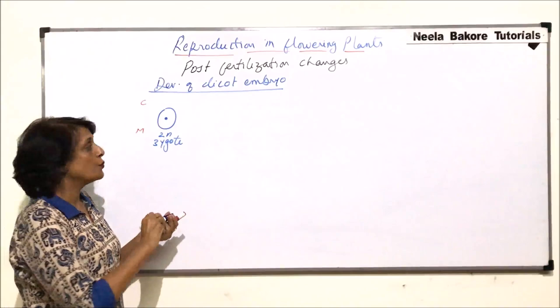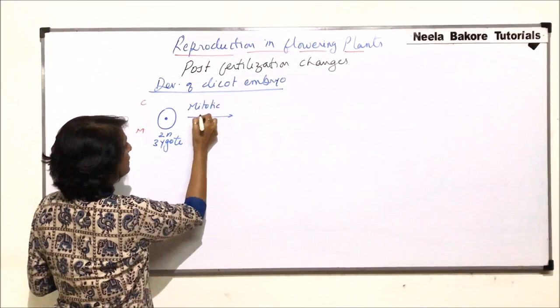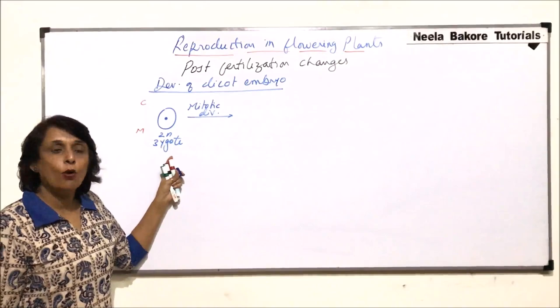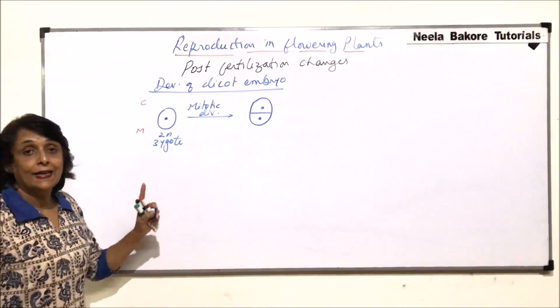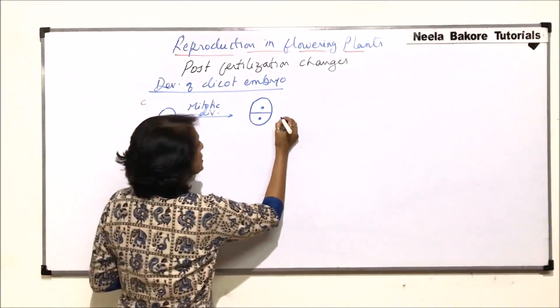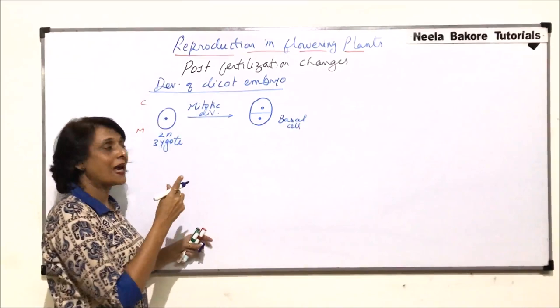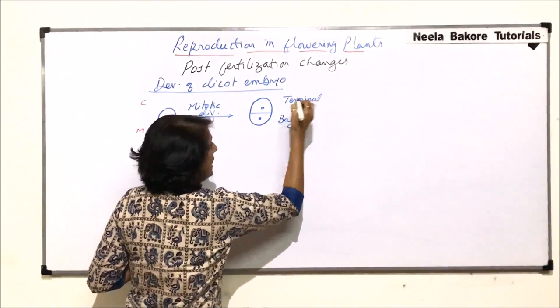The divisions which take place in the zygote are all mitotic divisions, which means all the cells formed are going to be diploid cells. This zygote undergoes a transverse division to form two cells. The cell which is towards the micropyle is known as the basal cell, and the one towards the chalaza is known as the terminal cell.